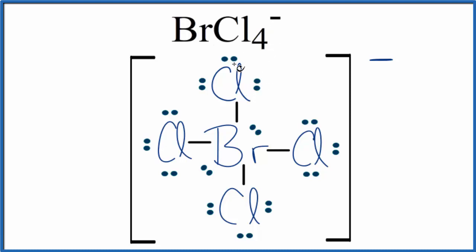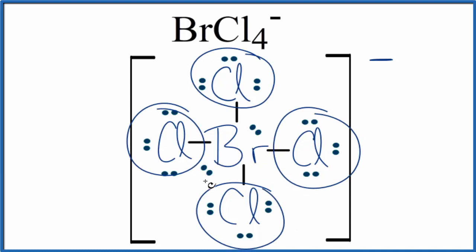If we wanted to figure out the electron geometry for this ion, we'd count up how many things are attached to the central bromine atom. So we have one, two, three, four atoms, and then two lone pairs. So our steric number is six because we have six things attached to the bromine. Two of those things are lone pairs.